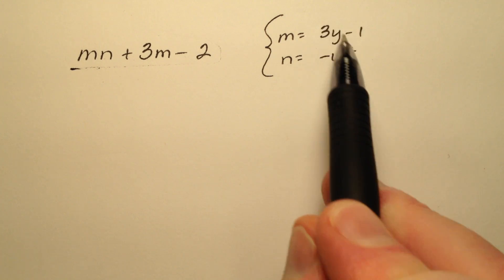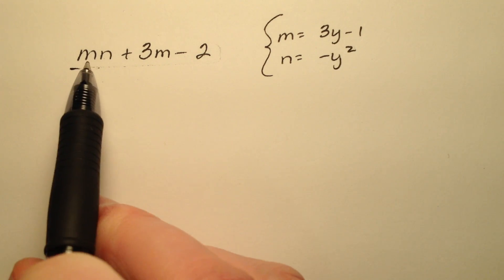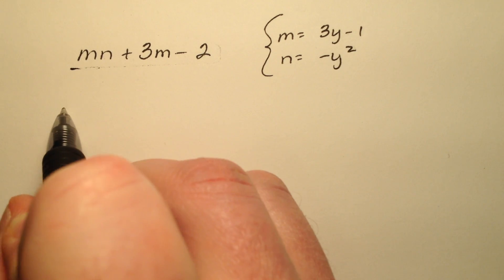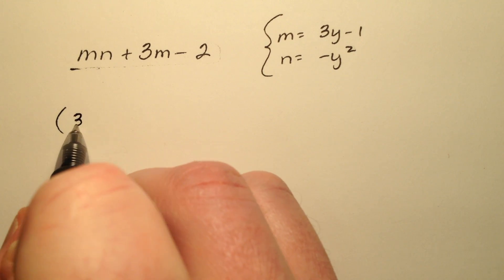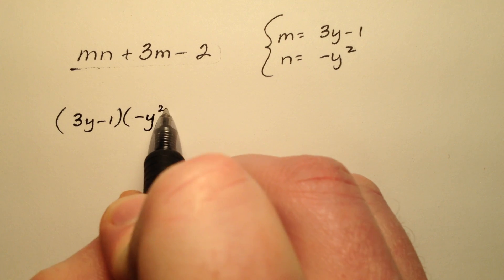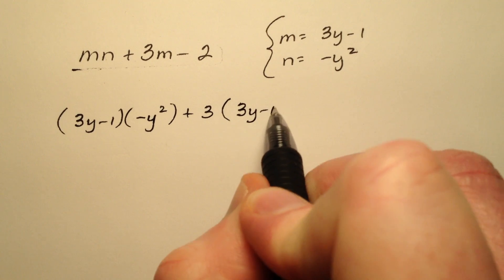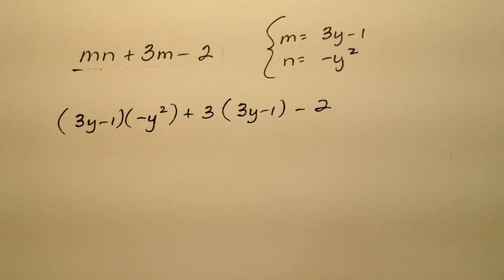So we're actually going to plug in algebraic expressions instead of simply numbers. So m times n, our m was 3y minus 1, our n was negative y squared, plus 3 times m, and m is 3y minus 1, and then minus 2.